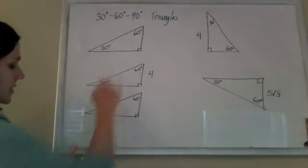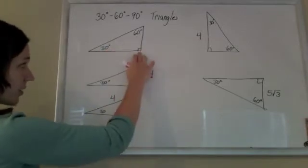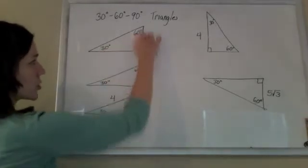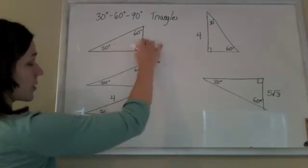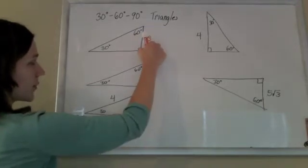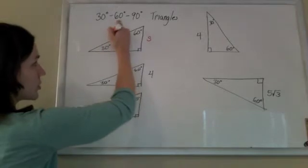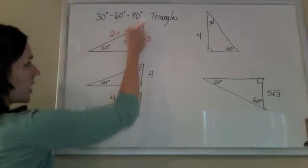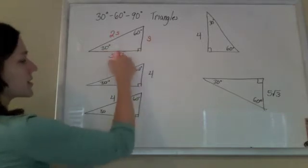All right, so our 30-60-90 triangles. If I have a 30-60-90 triangle, if I call the shorter leg, the one across from the 30-degree angle—because shorter sides are across from shorter and smaller angles—if I call that side S, then I know that the hypotenuse is twice that, and I know that the longer leg is whatever that is times root 3.